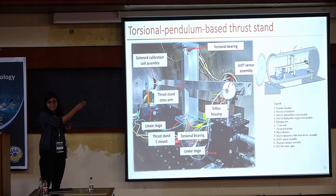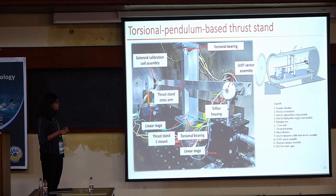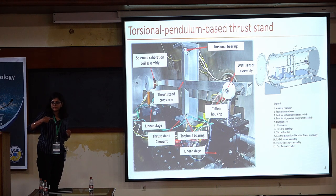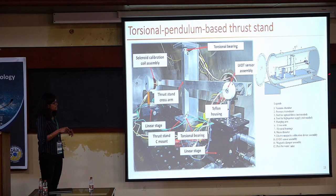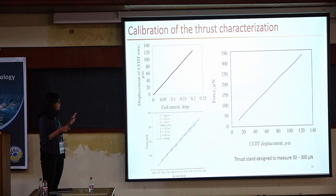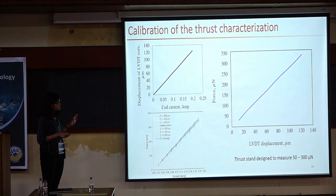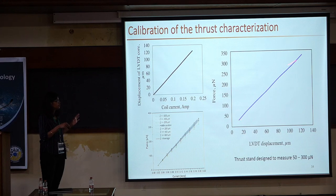The third part is thrust characterization. We have built a torsional pendulum-based thrust stand. The device is mounted on it, and we have an LVDT sensor. Based on the deflection that the LVDT measures, we can determine the level of thrust. This is housed in the vacuum chamber itself. Calibration experiments show that we can measure forces in the range of 50 to 300 micronewton, which is exactly what we want to characterize.